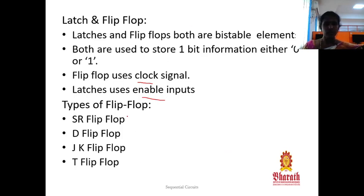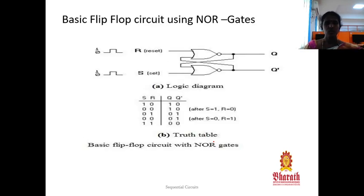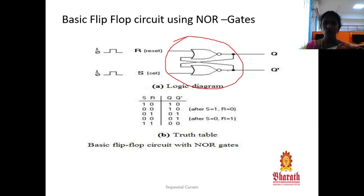We have four types of flip-flops: SR flip-flop, D flip-flop, JK flip-flop, and T flip-flop. SR stands for Set Reset. D means Delay flip-flop. JK is named after the scientist Jack Kilby. T is Toggle or Trigger flip-flop. Before going to the types, let me explain the basic flip-flop circuit. Flip-flop circuits are interrelated — the output of one logic gate is given to another logic gate, and that output is given to another, forming an interrelated circuit.